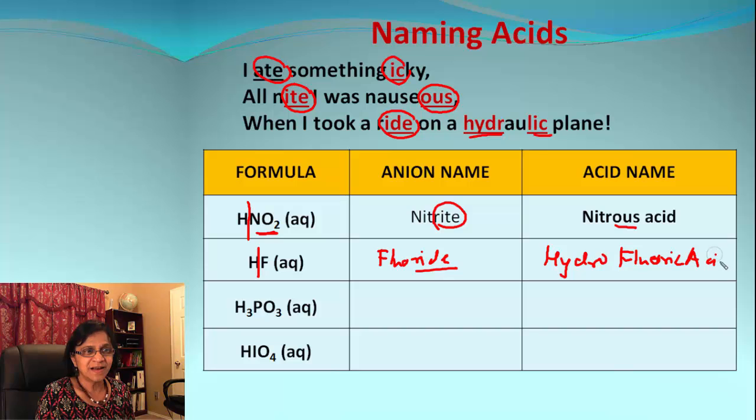How about H3PO3? PO3 is phosphite, ending with -ite. All night I was nauseous. So whenever we have phosphorus or sulfur, you have to add -or. So it's actually phosphorous acid.